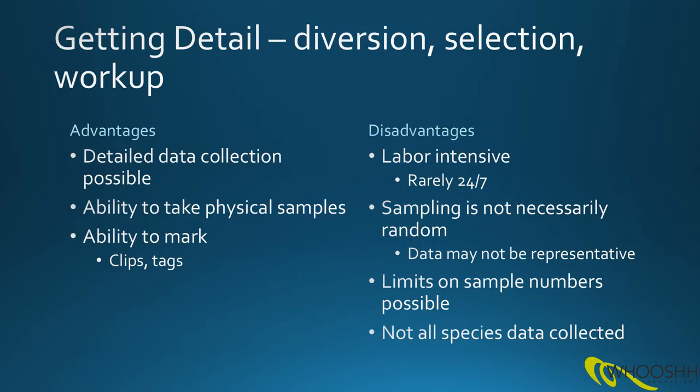Getting detail by diverting and selecting individuals from the ladder provides a lot more data on individuals and also affords the opportunity to perform physical marking and collections of samples for DNA analysis. However, it is again labour intensive and therefore there are limitations on how many fish can be worked up. This usually means only certain species or subpopulations are selected. Also because selection of the fish for workup is performed by human operators, possibly at the start of a shift or a work period, there's a chance that the fish selected may not be representative of the population of interest or conversely may have inherent bias in the selection and therefore not be truly random either.